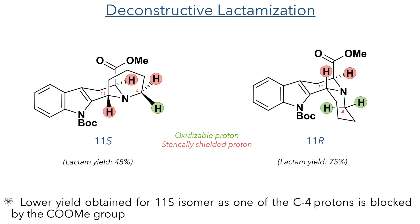While this reaction worked with both isomers, there was a significant difference in the yields obtained. This can be explained by looking at the steric hindrance around the oxidisable hydrogen atoms. In the 11-S isomer, one of the protons on carbon-4 is shielded by the methyl ester. While in the 11-R isomer, both protons on carbon-4 are free to react, and as a result generated a much higher yield than the 11-S isomer.